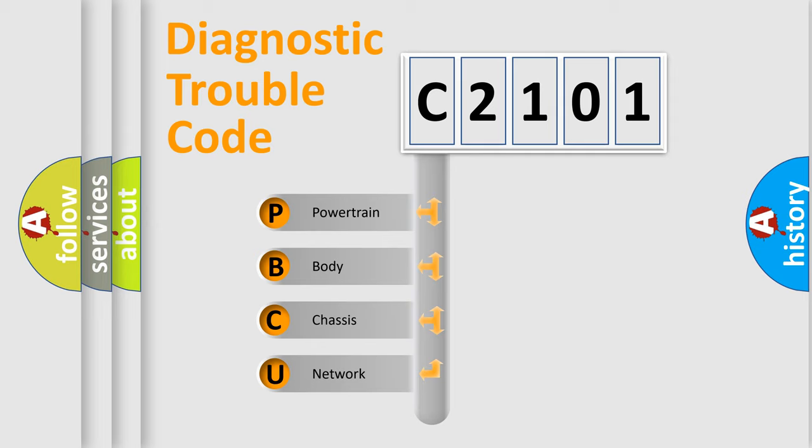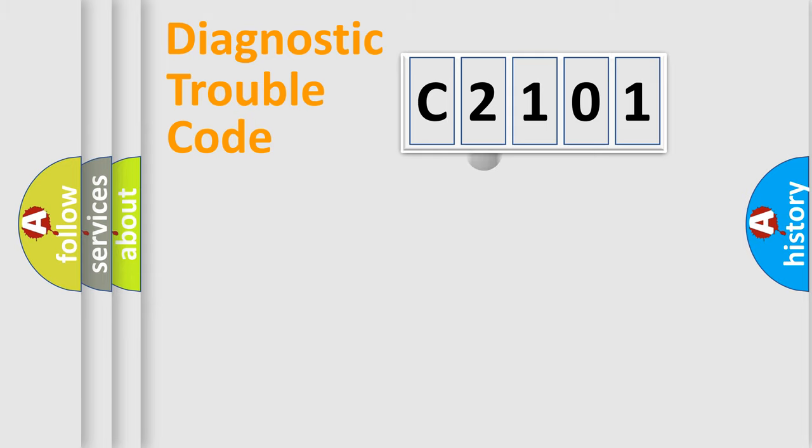We divide the electric system of automobile into four basic units: Powertrain, body, chassis, and network. This distribution is defined in the first character code.